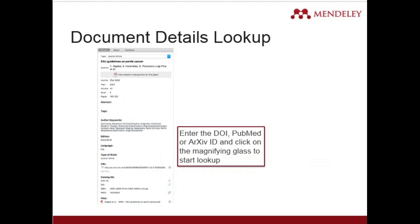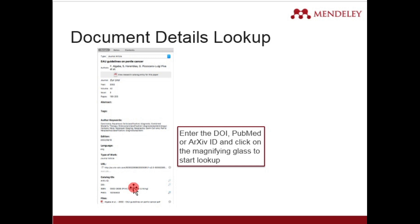When you add any document to the Mendeley library, it automatically collects the metadata information and displays it when you select the particular document in the right pane. This shows the bibliographical details about the document in a descriptive way. You can also modify this document detail lookup — if something was not fetched automatically, you can add it manually, which helps you fetch the document easily through different search options.